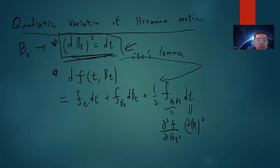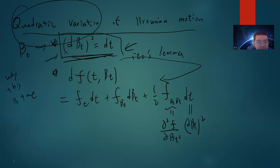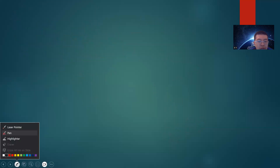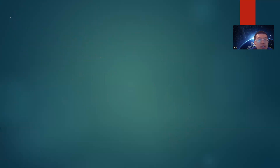So this is where the whole stochastic calculus comes from, if you have this formula. The problem is: why is this true? This is the quadratic variation of Brownian motion. In this video, I will explain why this is true. Let's talk about the informal definition.